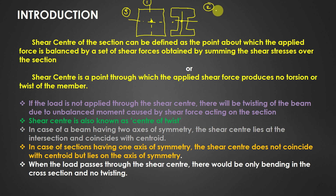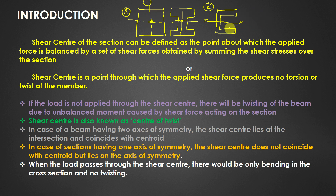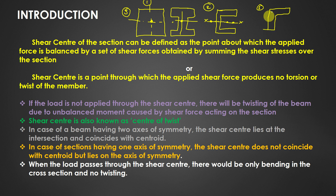The second case is sections symmetrical about one axis — for example, channel section, which is symmetric about the horizontal axis. In this case, the shear center will be located somewhere on the axis of symmetry, either inside or outside the section. The third case is unsymmetrical sections like angle section, which is not symmetrical about any axis.